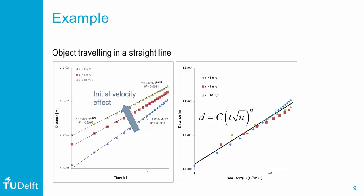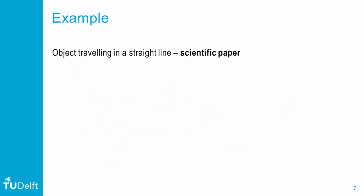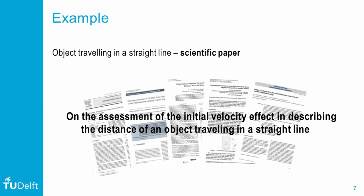Now for this given case, both parameters apparently have the same value. Which brings us to the fourth magic moment. If certain parameters clearly relate, then there must be something correct in what we do. And now we can make predictions, so let us draft a paper on the assessment of the initial velocity effect in describing the distance of an object traveling along a straight line.